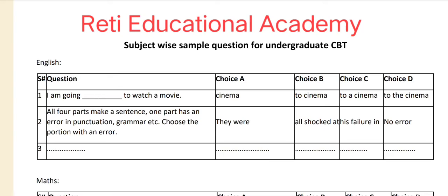Number two: All four parts make a sentence; one part has an error in punctuation, grammar, etc. Choose the portion with an error. The options are: they were all shocked at this failure. The correct answer is D — there is no error. Subscribe to Reti Educational Academy YouTube channel for more videos and papers. Thank you.